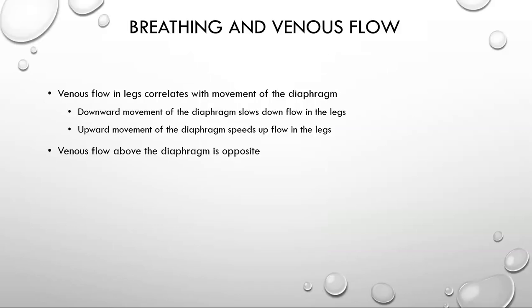To summarize venous flow and breathing: venous flow in the legs correlates with the movement of the diaphragm. Downward movement of the diaphragm slows flow in the legs; upward movement speeds up flow in the legs. Venous flow above the diaphragm is just the opposite.